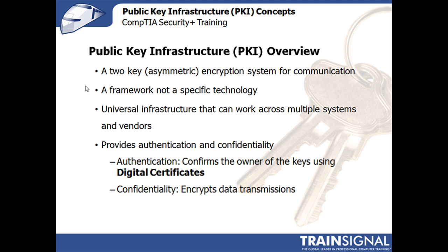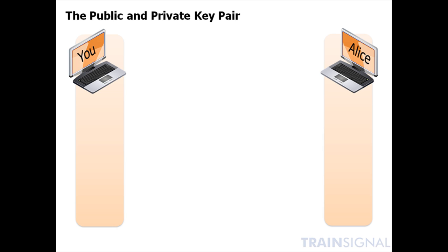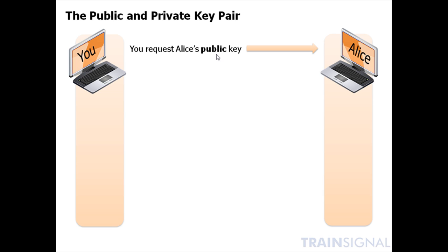But first, let's start with those two keys. Let's say you want to send a secure message to Alice. Alice has a key pair — a public key and a private key — and those two keys are mathematically related. They were created by a special algorithm at the same time. You request Alice's public key. Now, that's public, meaning anyone can see it, anyone can have it, so she sends it to you.